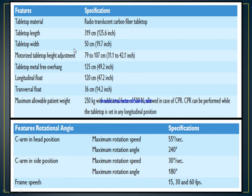Table specifications include: tabletop length 319 cm, tabletop width 50 cm, motorized tabletop height adjustment 79 to 107 cm, metal-free overhang 125 cm, longitudinal and transverse float, maximum allowable patient weight 250 kg. Rotational angiography features include: in the head position, maximum rotation speed is 55 degrees per second; in the side position, maximum rotation speed is 30 cm per second; and frame speed is 30 to 60 frames per second.